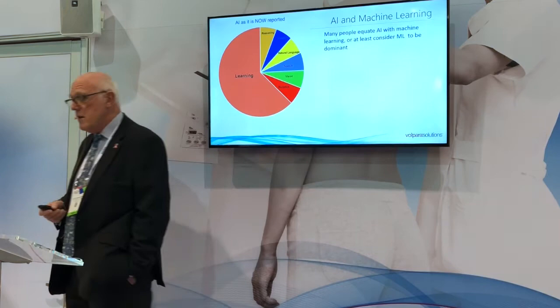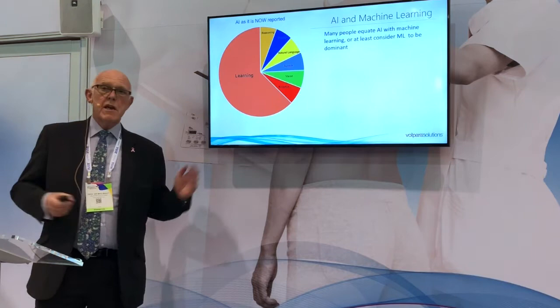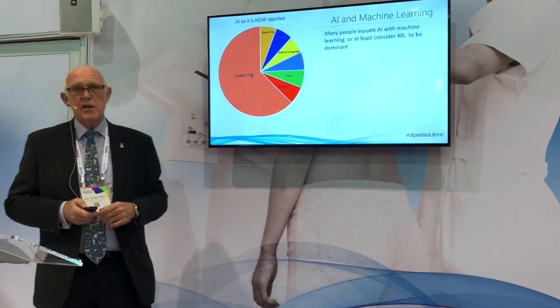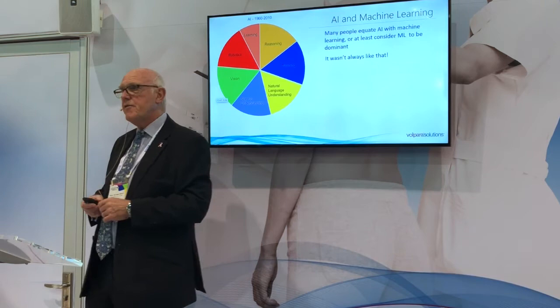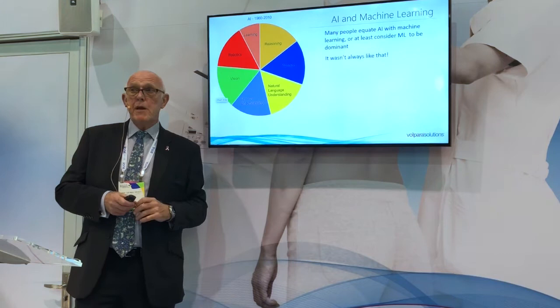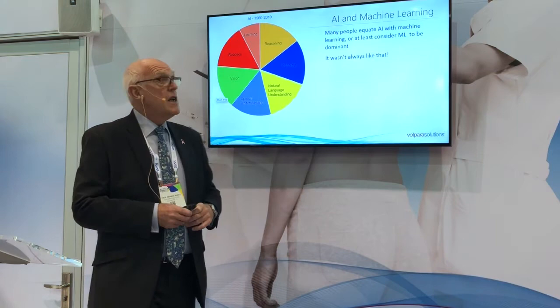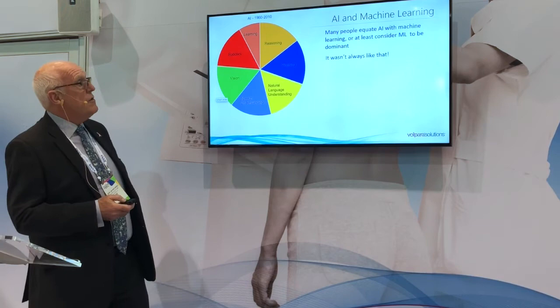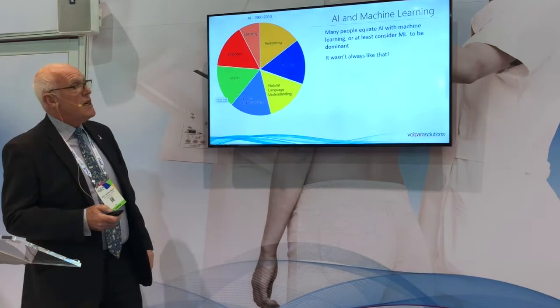If you walk around this show or read any of the AI literature, you'll be presented with a picture that's overwhelmingly about machine learning, with small bits relating to robotics, vision, and speech. AI is considered to be no more and no less than machine learning. But if you look back about 25 years, it wasn't like that at all. Papers from the International Joint Conference on AI in 1985 show very little on machine learning — it was nearly all robotics, vision, and speech understanding.